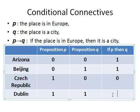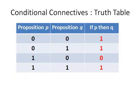Finally, we have Dublin. Dublin is in Ireland and it is a city. So for this example, if the place is in Europe then it is a city — that statement is true if you are talking about Dublin. So for that we would have a one.